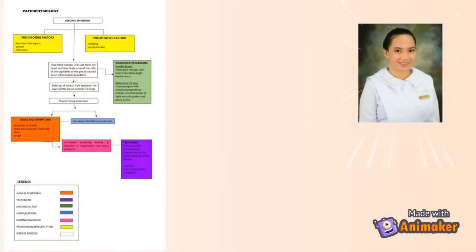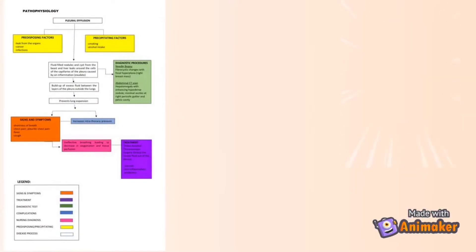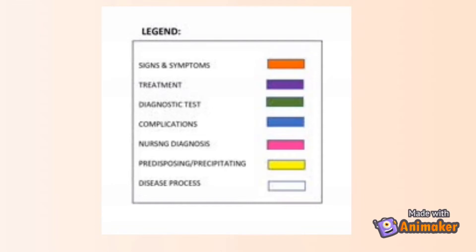Here is an example of pathophysiology for pleural effusion. Below this is a legend that helps us understand what each color represents. Signs and symptoms are in orange, treatment in violet, diagnostic tests in green, complications in blue, nursing diagnosis in pink, predisposing and precipitating factors in yellow, and the disease process is represented by a white box.